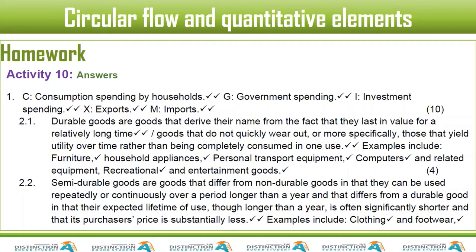Examples of durable goods include furniture, household appliances, personal transport equipment, computers and related equipment such as printers, recreational equipment like gym equipment, entertainment goods like keyboards and speakers, and televisions. So we can classify those under durable goods — I pick the strongest examples like a car or a bus, those really durable big things.